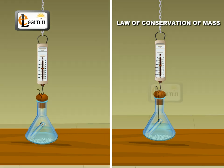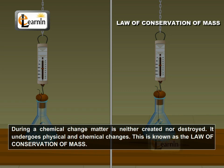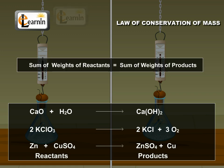From these experiments, we infer that during a chemical change, matter is neither created nor destroyed. However, it does undergo physical and chemical changes. This is known as the law of conservation of mass. In all these cases, the sum of the weights of the reactants is equal to the weight of the products.